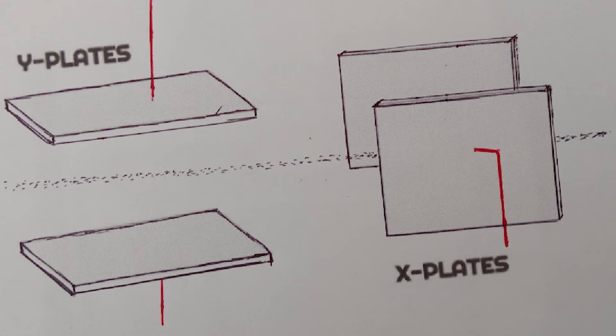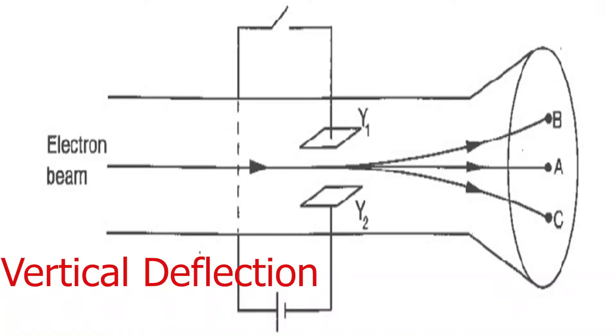Let us look at the vertical deflection. Vertical deflection is caused by Y plates. When a direct current flows through the plates, they become charged. Plate Y1 becomes positive, while Y2 becomes negative. This makes the beam to be attracted to Y1, hence it hits the screen at point B. If polarity of the plates is reversed, the spot will shift to C. When the plates are uncharged, the beam passes undeviated and hits the screen at point A.